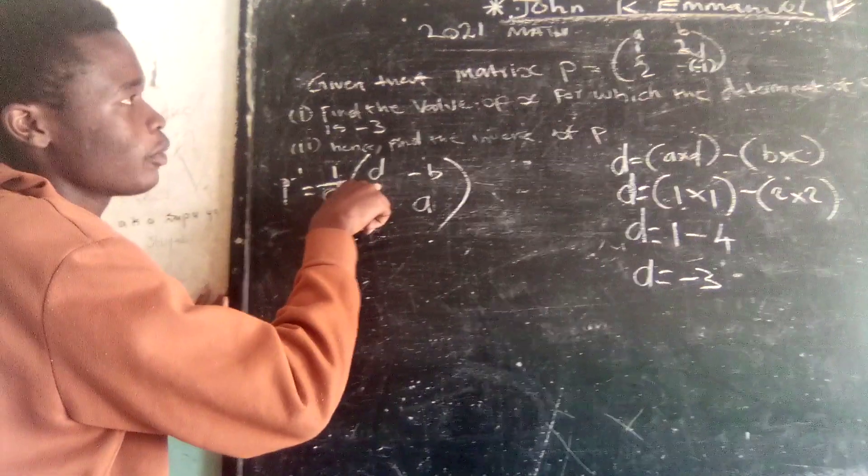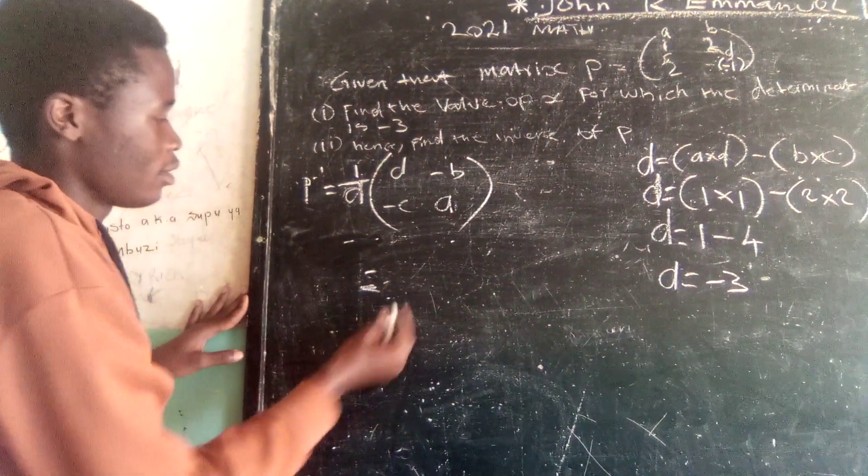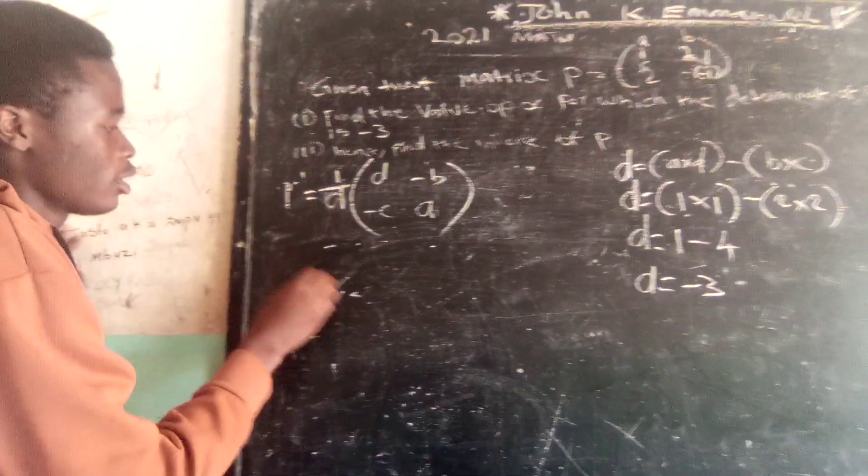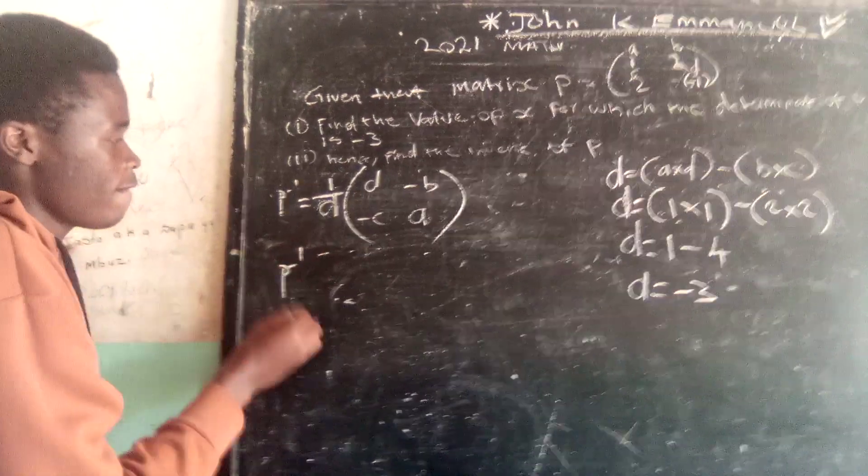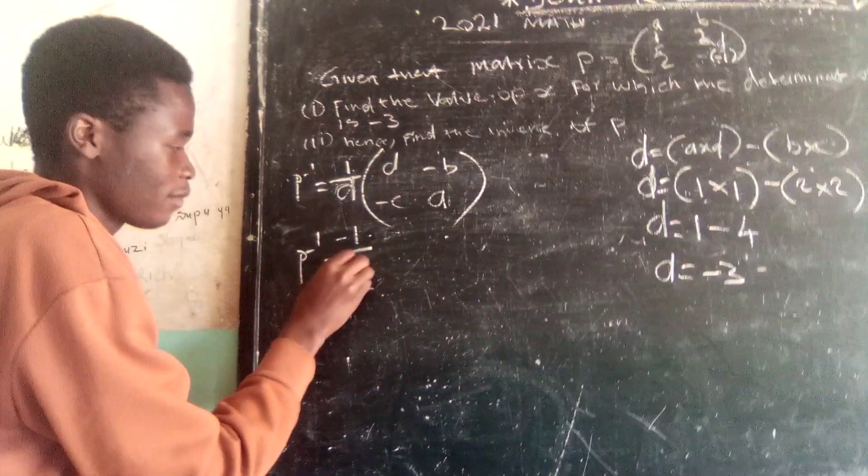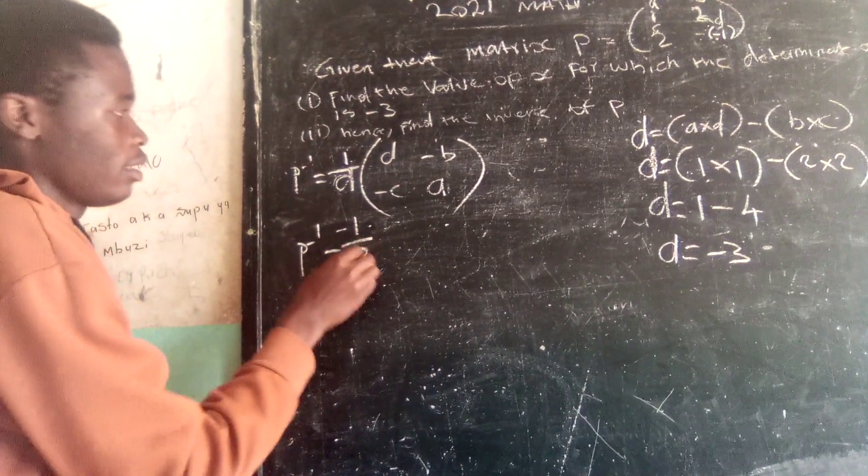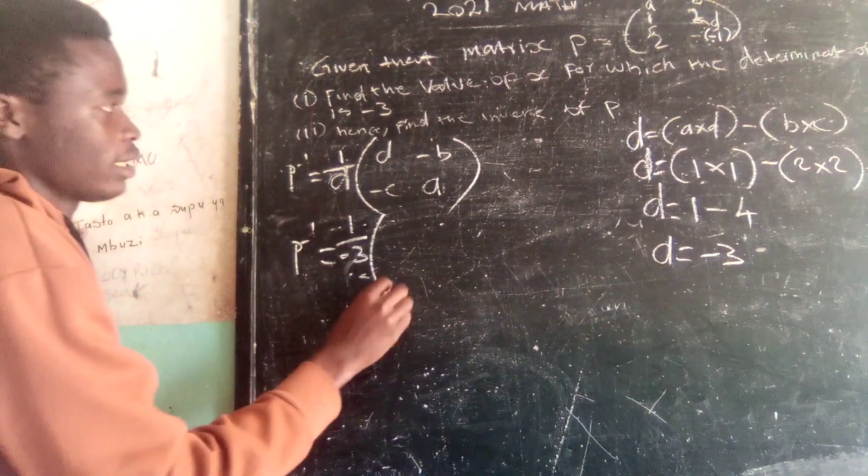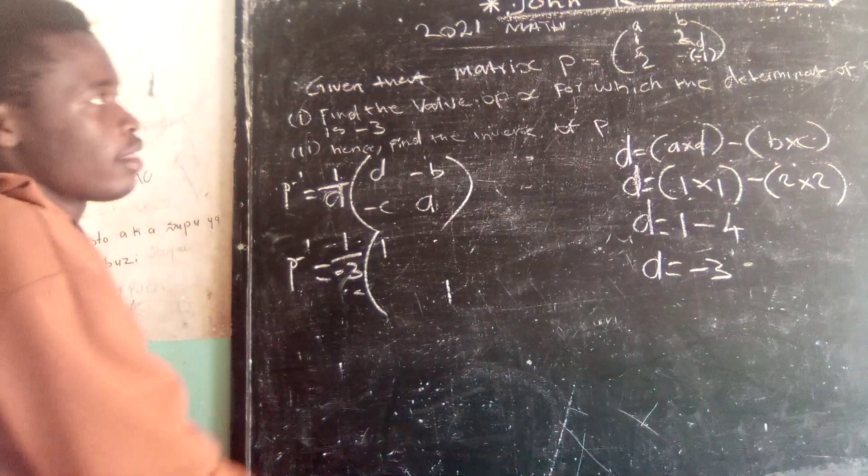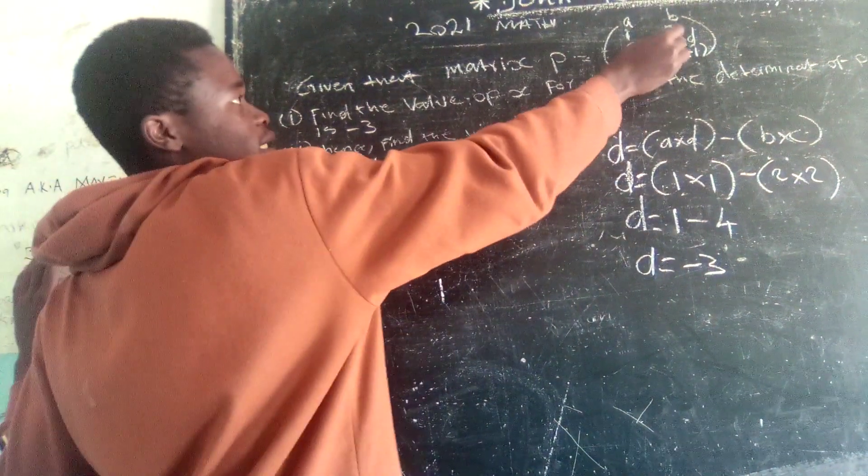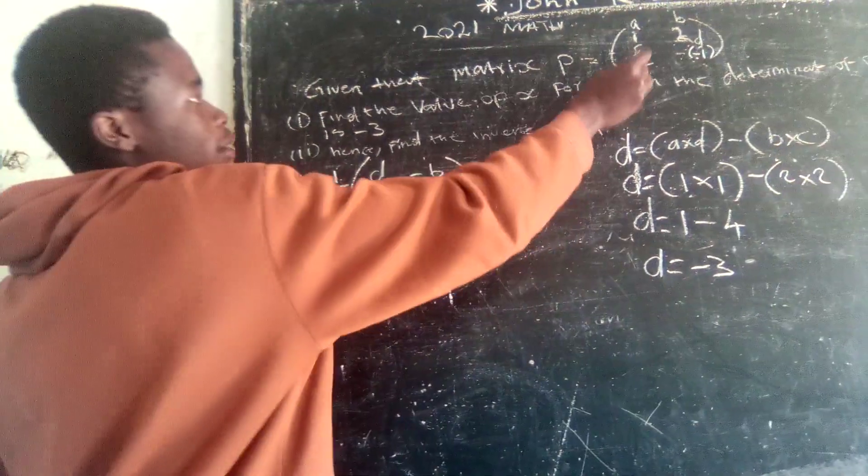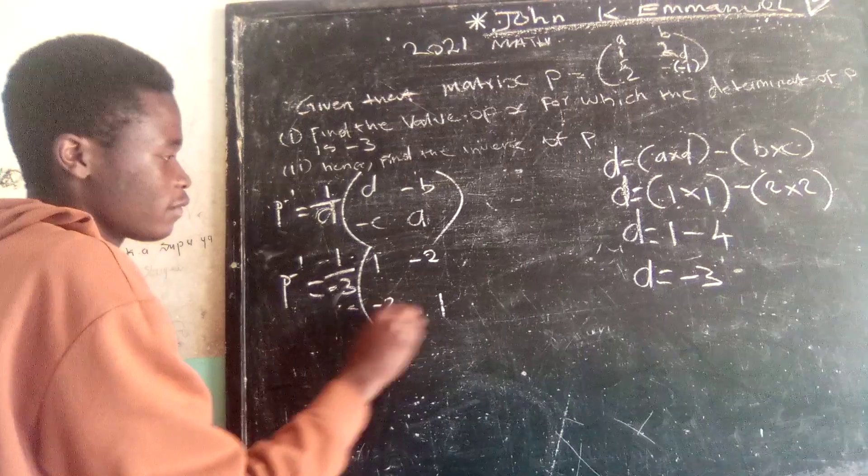Therefore, our D which is positive 1, we're going to start by writing our determinant. So P inverse is supposed to 1 divided by determinant is negative 3, open brackets. D which is positive 1. A which is positive 1, then B which is positive 2 becomes negative, negative 2. C which is positive 2 becomes negative, negative 2.